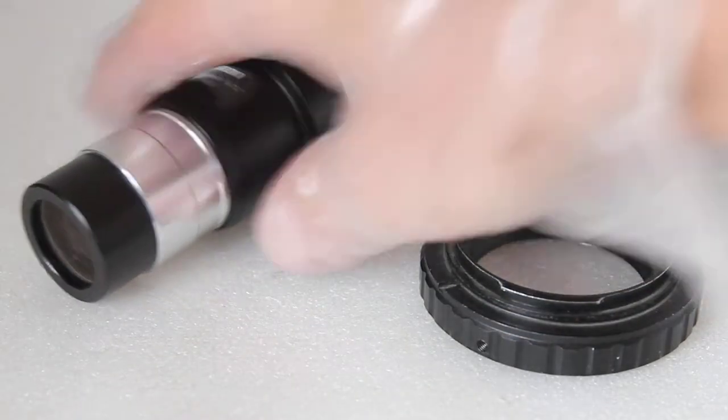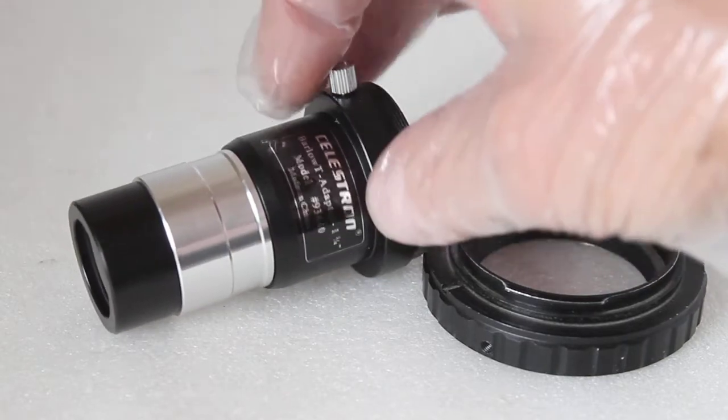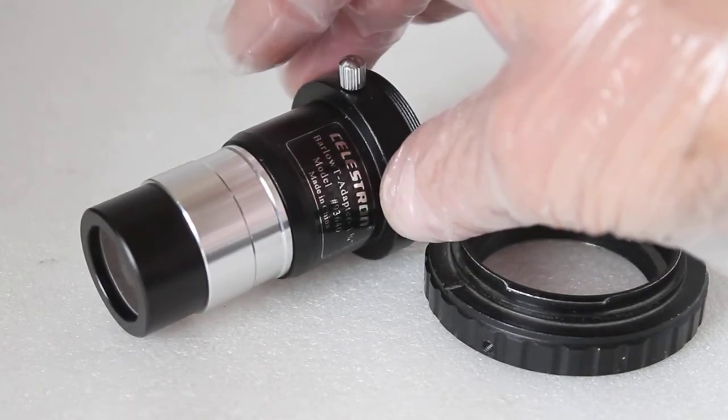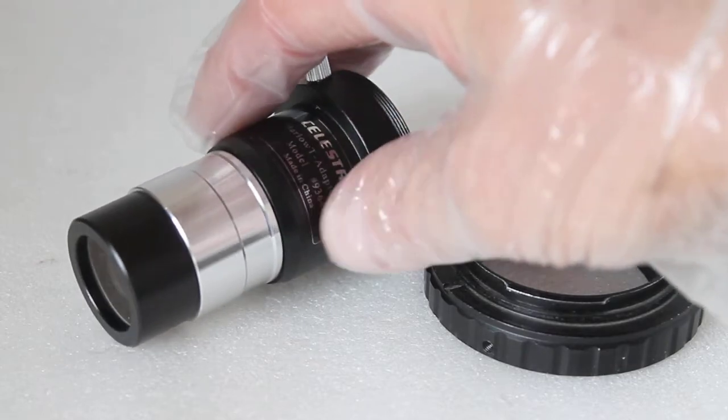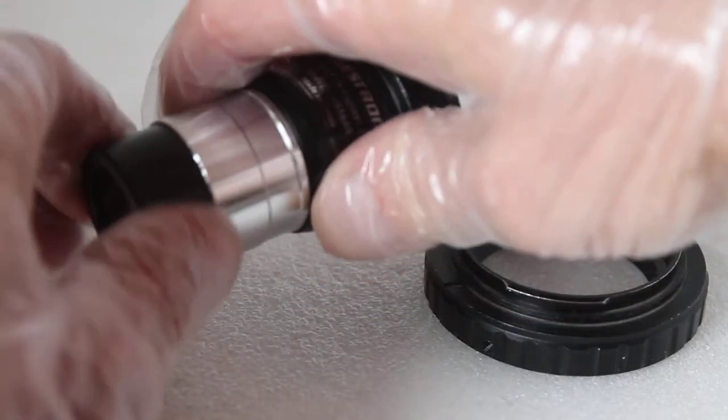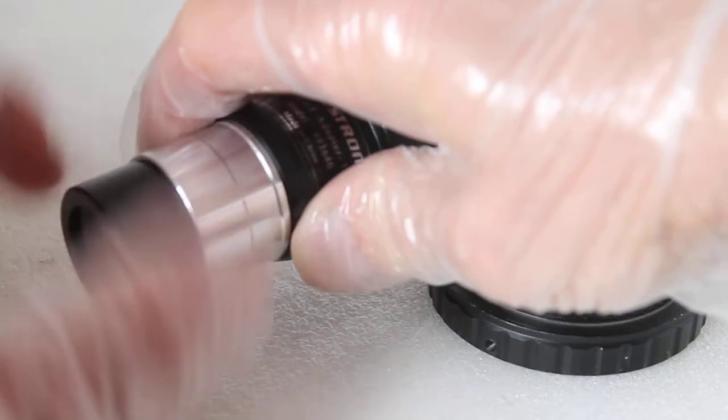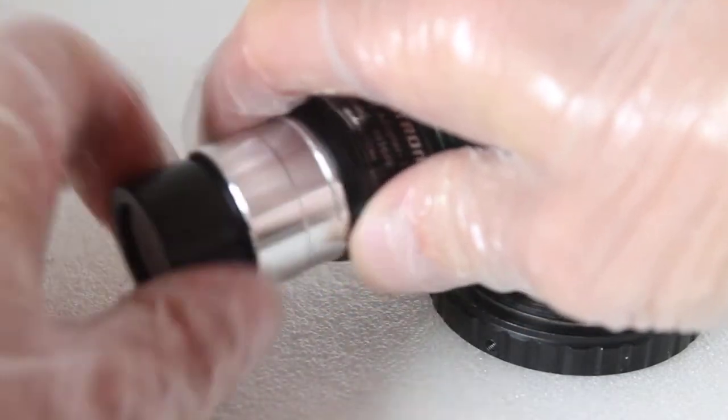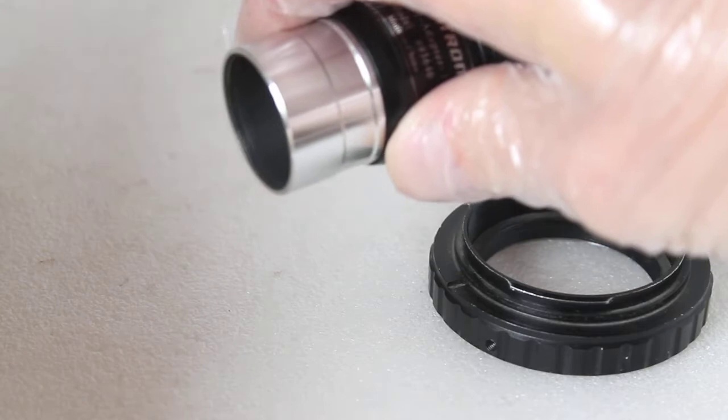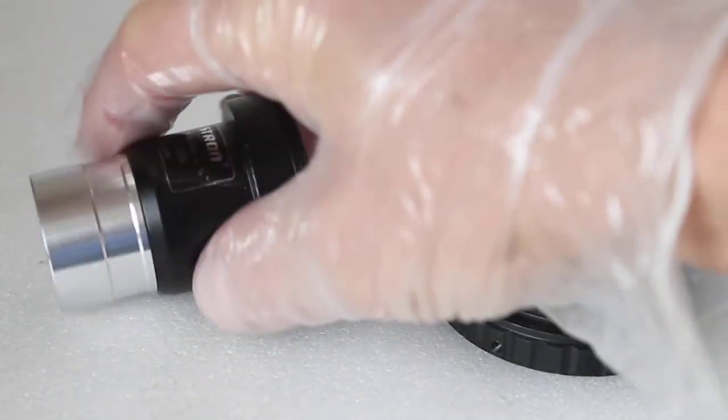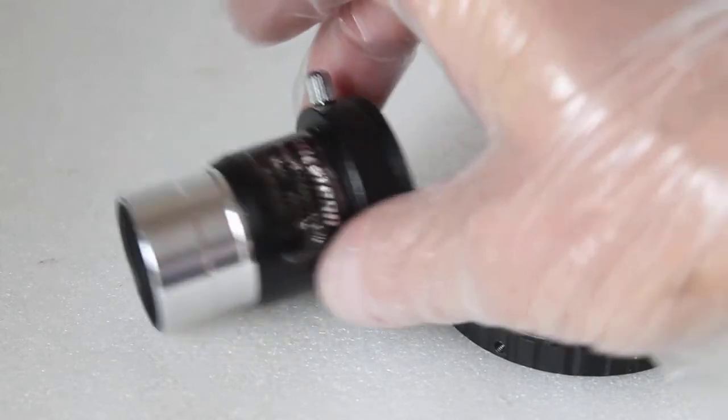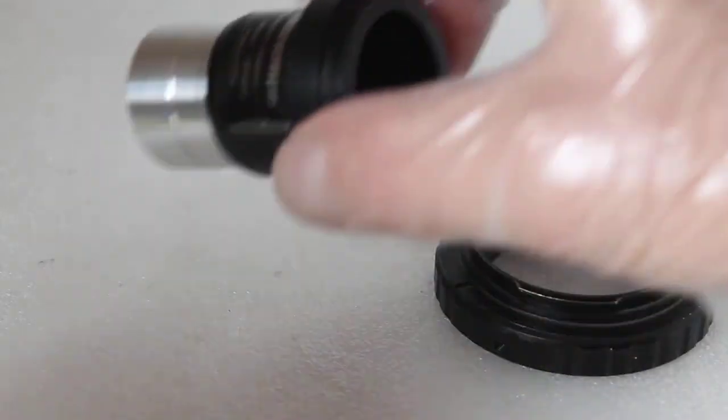Now what you can do, quite simple really, if for the sake of argument you're 30 or 40 millimeters short of getting focus, what you can do is remove the lens out of the Barlow. Not all lenses come out as easy as this; some you might need an extra little bit of a tool.